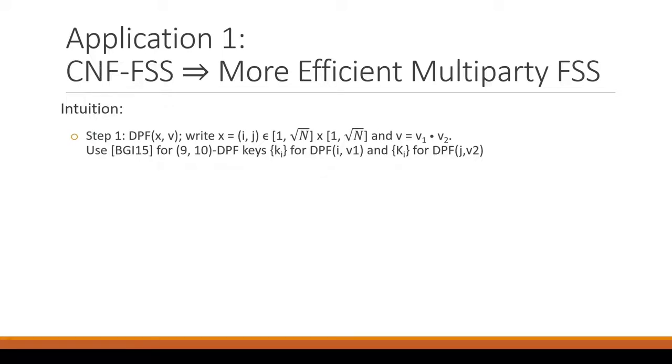So the intuition behind this result, so the way that the protocol is constructed, if you want to generate a DPF function on secret domain point X and value V, we chop the domain into a square. So root N by root N and write X equals I comma J. We also split the value into a product of two values. And then we use the original square root of N communication protocol to give a 9 out of 10 keys. So there are 10 keys here, and it has the property that if any 9 of the keys are combined, then nothing is learned, and you need all 10 keys to reconstruct the secret function.